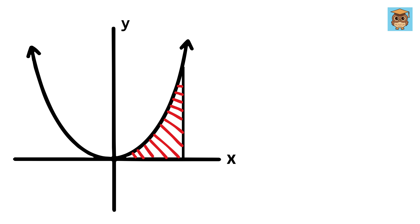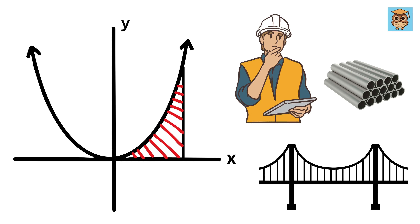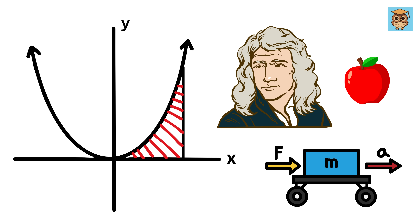Integration has thousands of real-life examples. Engineers use integration to calculate the amount of material needed to build curved structures like arches or bridges. Economists use it to measure total income when graphed as a curve of earnings over time. Physicists use it to find areas under graphs representing motion, like velocity versus time, to calculate distance traveled.